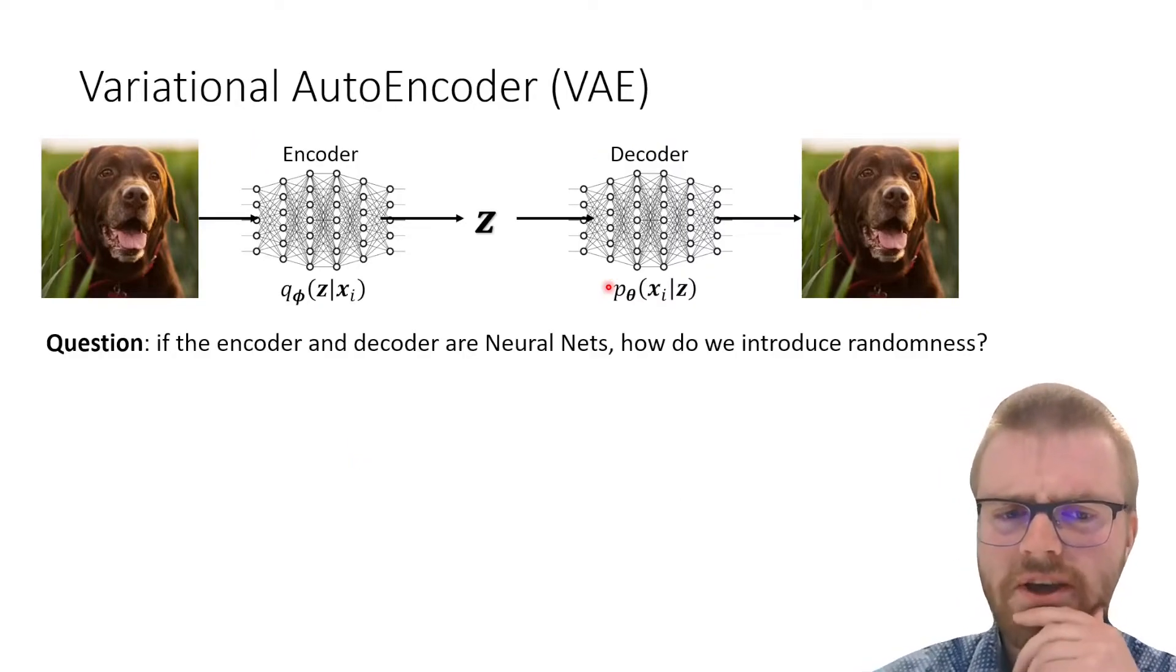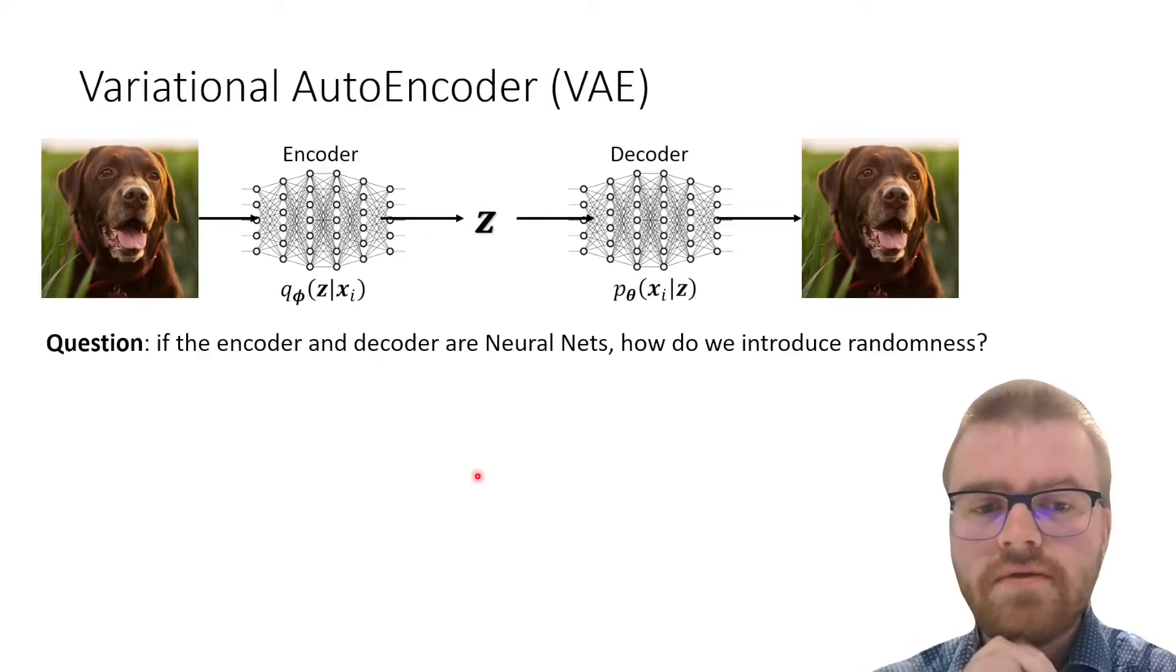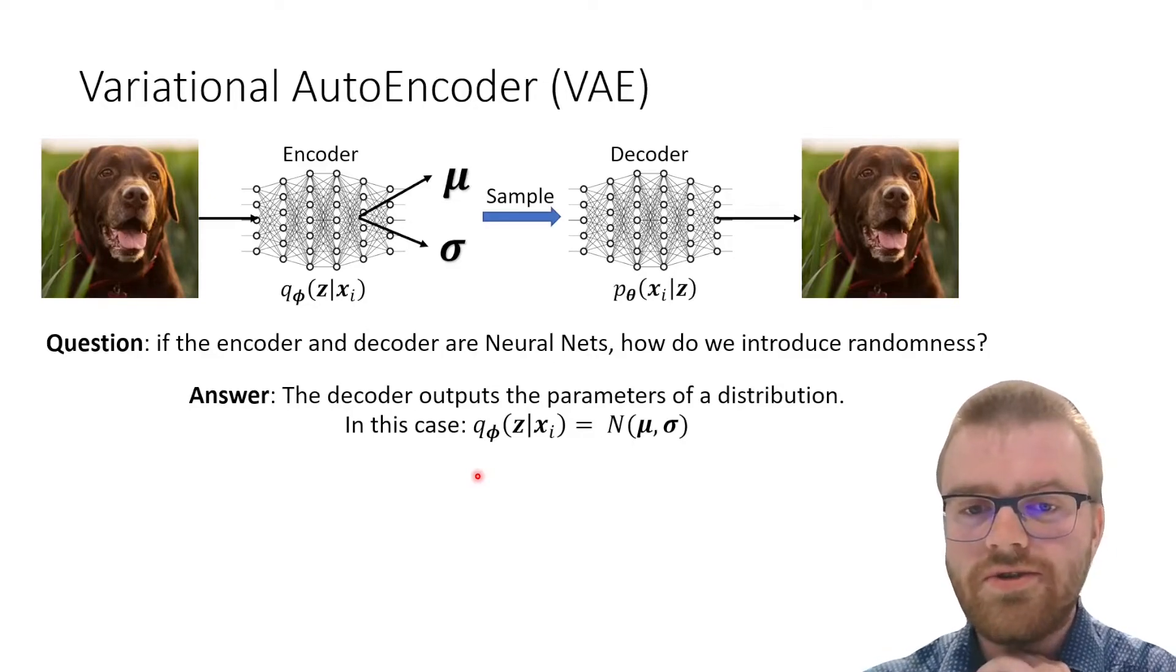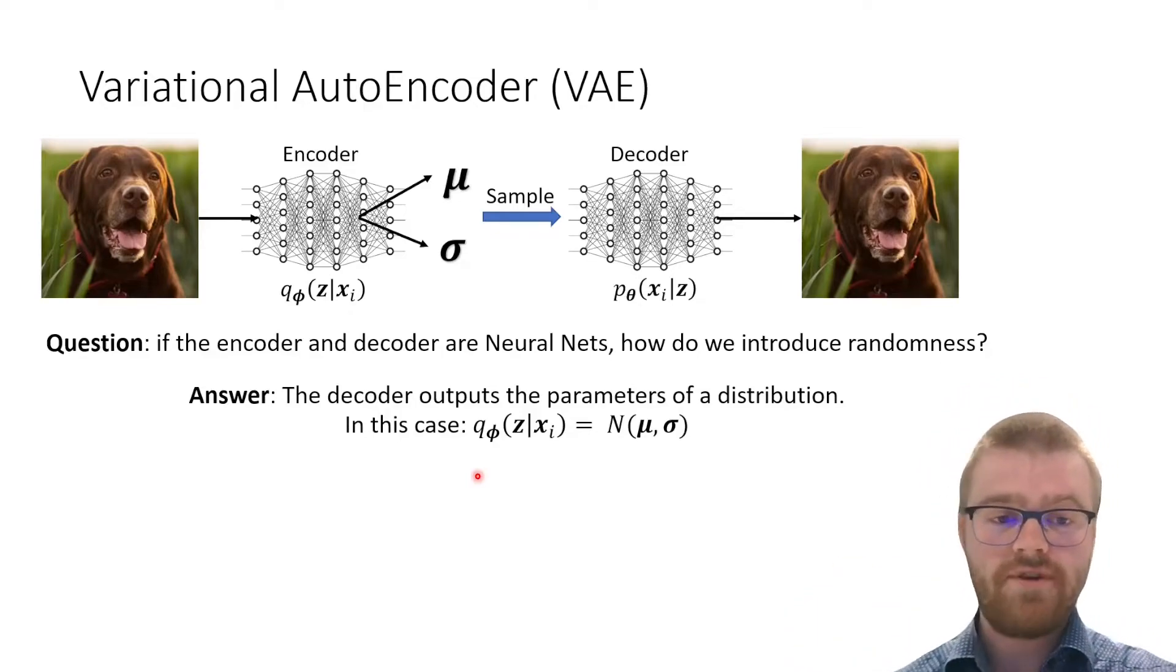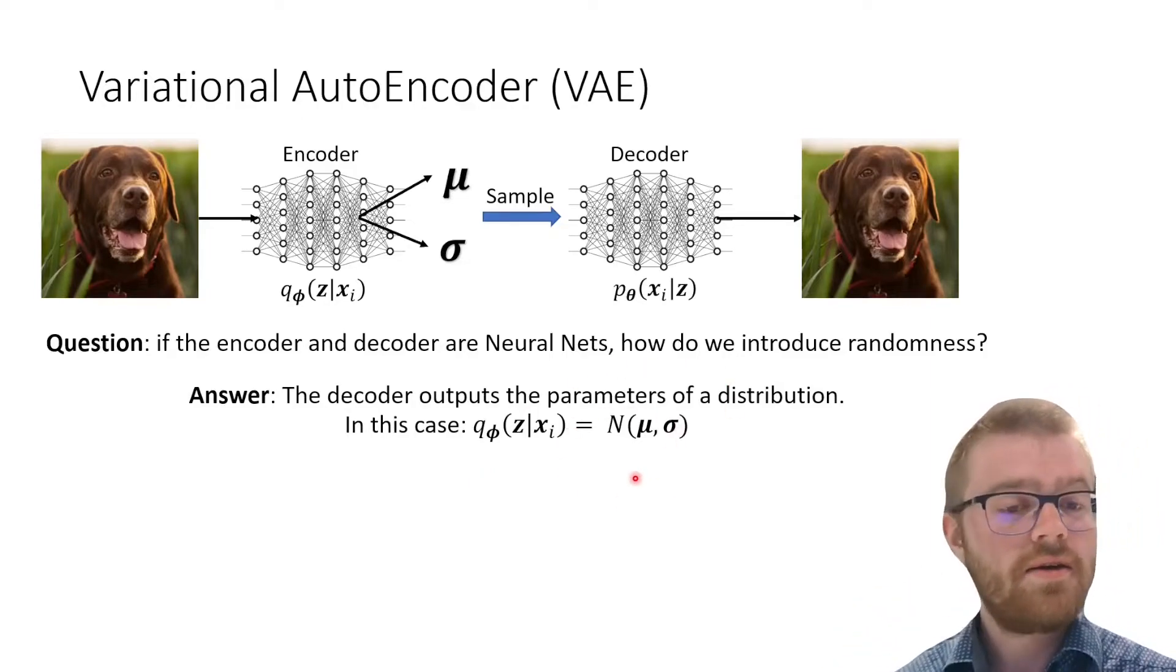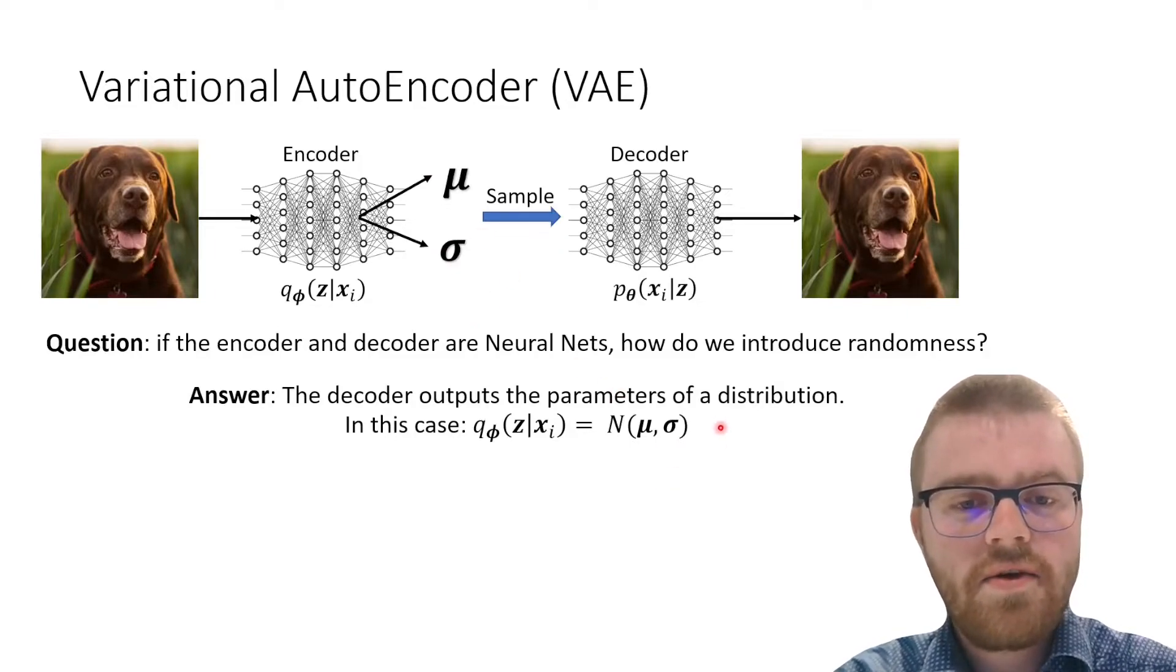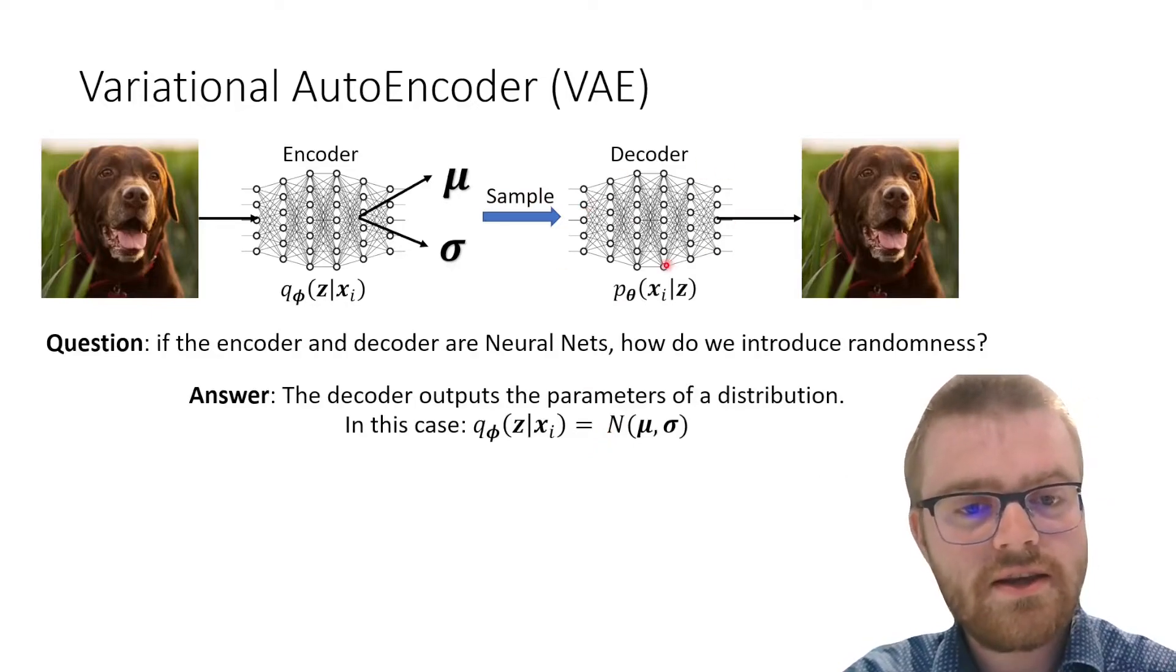Now we have the following question: if the encoder and decoder are deterministic neural networks, how do we introduce randomness? The answer is that the encoder is going to output parameters of a distribution. It's not going to give random outputs—it's going to give you deterministic outputs which then form a probability distribution. So for example, it outputs a vector of means and a vector of variances, and then we will sample from that normal distribution to put into the decoder.